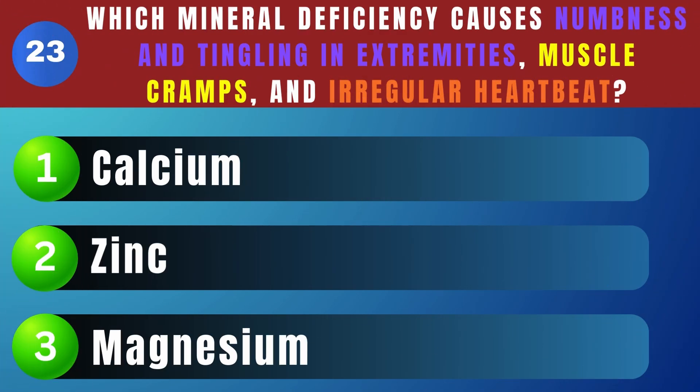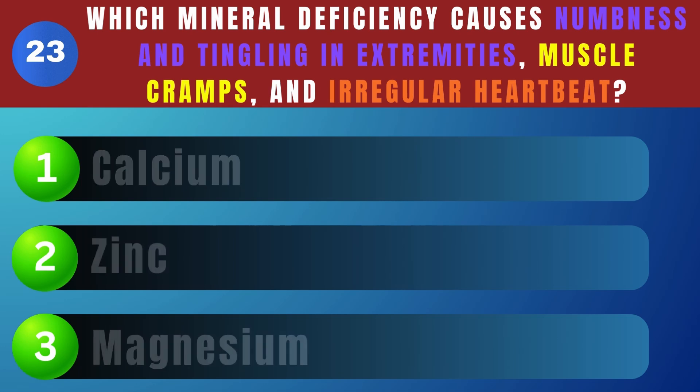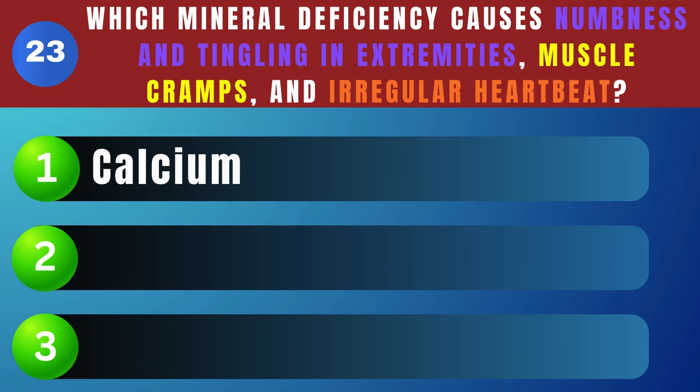What deficiency causes numbness and tingling in extremities, muscle cramps, and irregular heartbeat? Calcium.